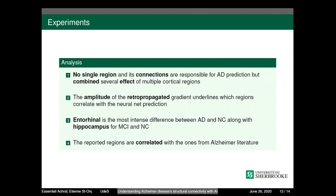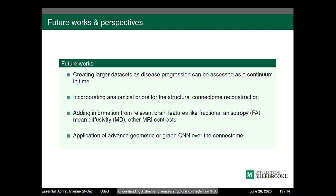For future work, we aim to create larger datasets as disease progression can be assessed as continuum in time, while incorporating anatomical priors for the structural connectome reconstruction by adding information from relevant brain features like fractional anisotropy, mean diffusivity, and other MRI contrasts. The application also by then advanced geometrical graph CNN over the connectomes.